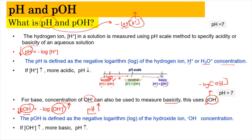As the hydroxide ion concentration increases, the solution becomes more basic and the pH goes higher — pH and pOH are inversely proportional. On the next slide we'll see the relationship between pH and pOH by relating it with the ionic product of water.